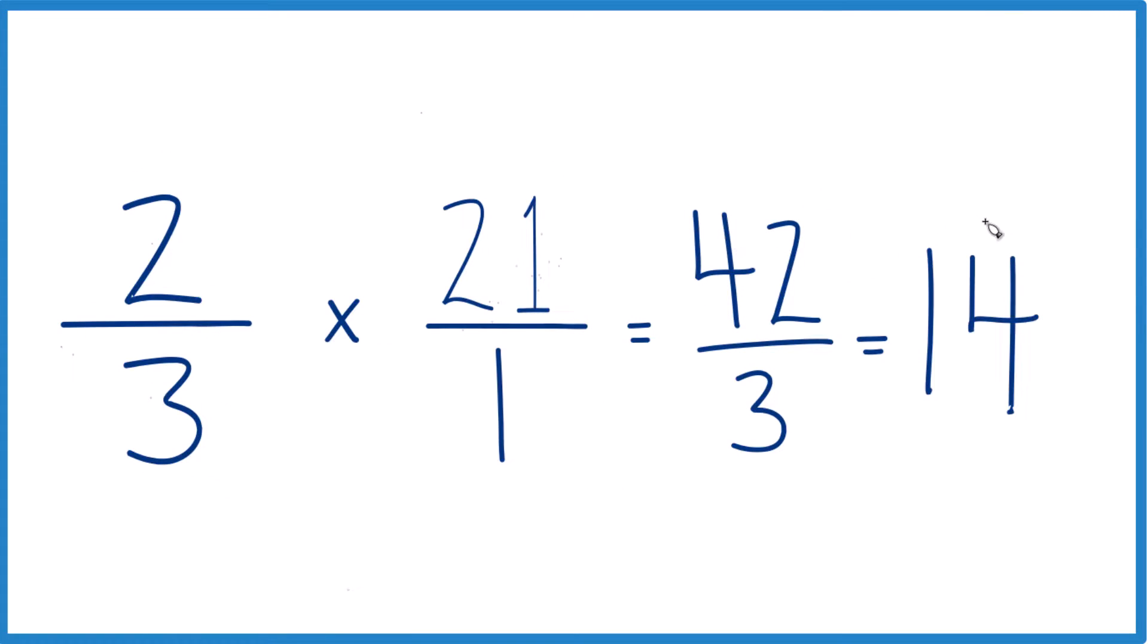So we can divide 42 by 3, and it gives us a whole number, 14. So two-thirds times 21, it actually ends up equaling 14.